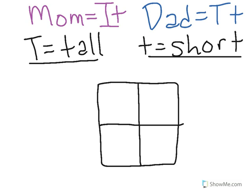The mom is tall because she has a dominant and recessive trait, and the dad is also tall because he has a dominant and recessive trait. This is called heterozygous.